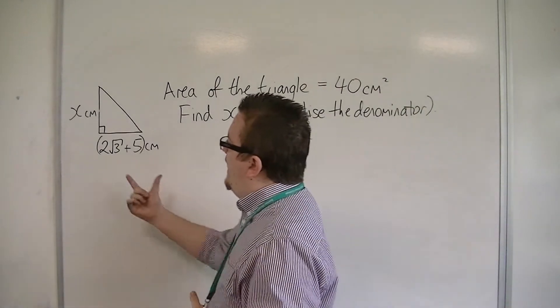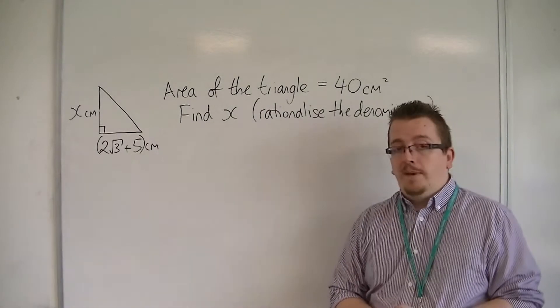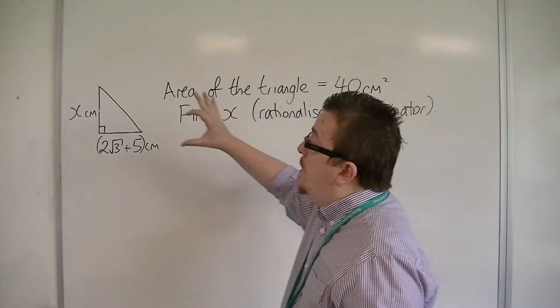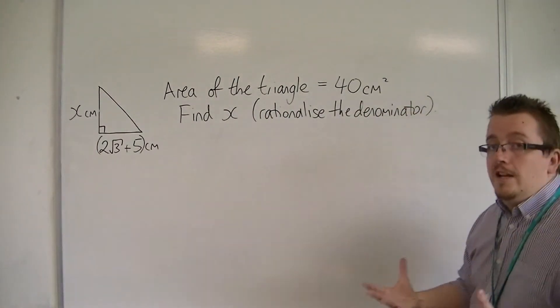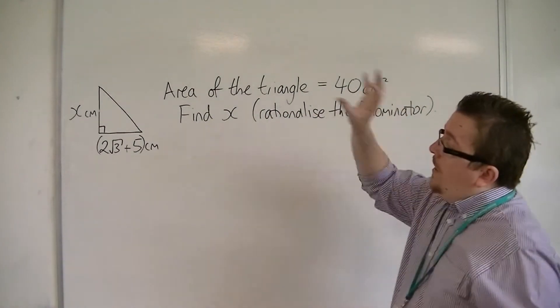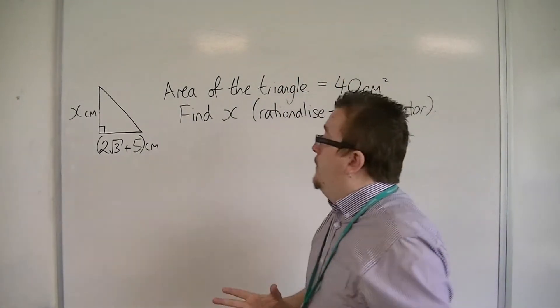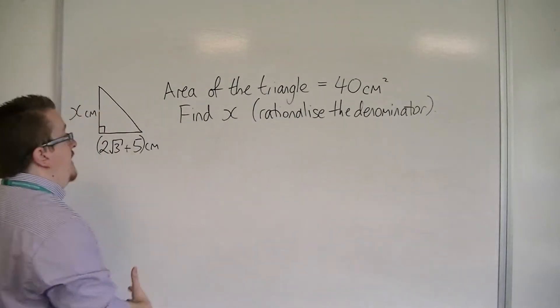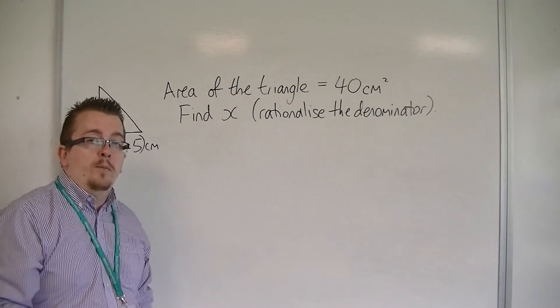We know the length of the base of the triangle is 2 root 3 plus 5 centimeters. We don't know the height of the triangle, but we do know the triangle is a right-angled triangle. We are told that the area of the triangle is 40 centimeters squared, and what we want to do is find x. And in that process, we are going to rationalize the denominator.